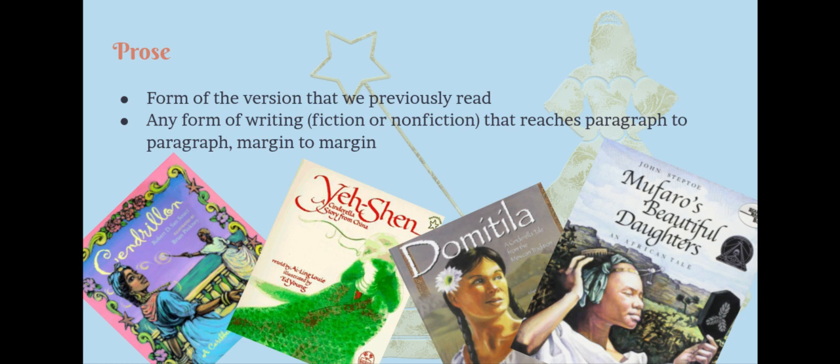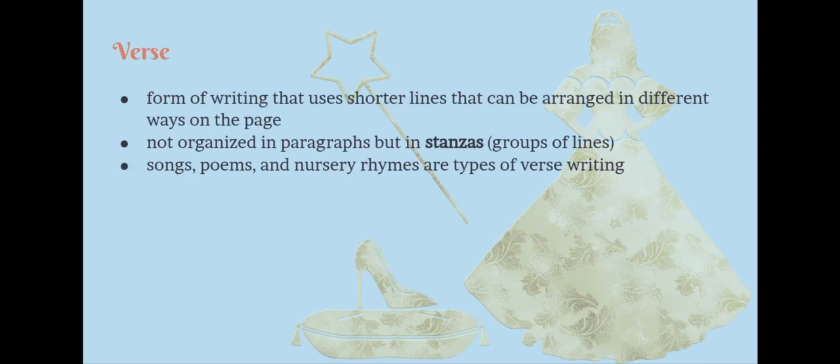But what is this new version that we're going to read now? It's in verse. Verse is a form of writing that uses shorter lines that can be arranged in different ways on the page. They're not organized into paragraphs, but in groups of lines called stanzas. And if you think this sounds like poetry, you're right — because songs, poems, and nursery rhymes are types of verse writing.